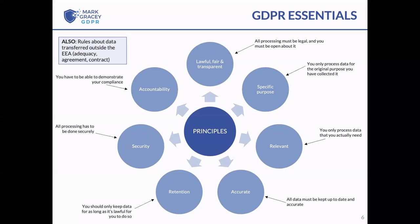The seventh is the accountability principle — a new principle introduced with GDPR. In its essence, it's up to you to be able to demonstrate your compliance. You can't just say you think you're doing all the right things; you actually have to be able to demonstrate it, should you be asked by the regulator, which in the UK is the Information Commissioner's Office.